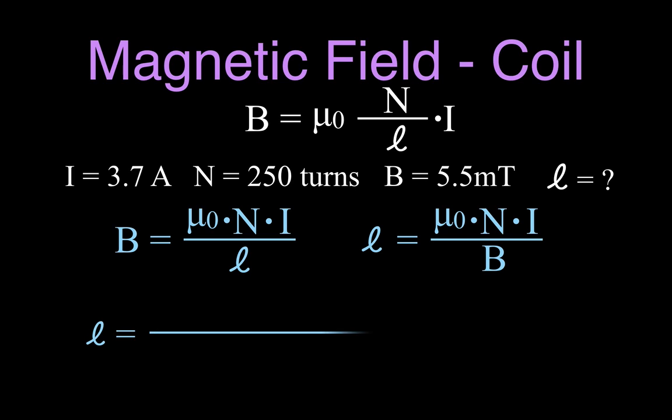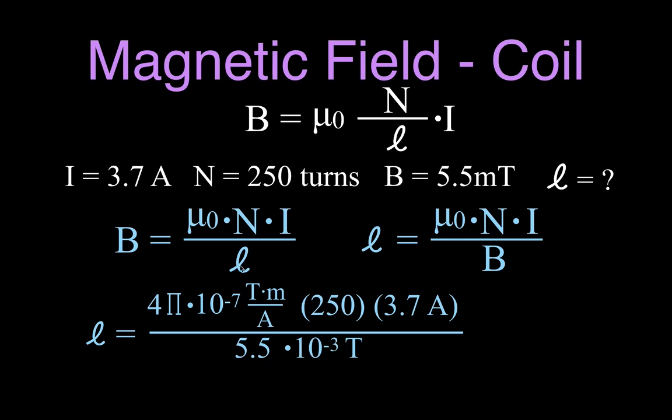Magnetic field strength, and now we can plug our numbers in again, and we get that 4π×10⁻⁷ times 250 times 3.7 divided by, now this is 5.5 milliteslas, so I put 5.5×10⁻³ teslas. We want to get everything in base units, so to speak. And then we do that, and we get that that's 0.21 meters. The answer comes out in meters. You can see teslas cancels, amperes cancels, left with meters, and you can say that that's 21 centimeters.